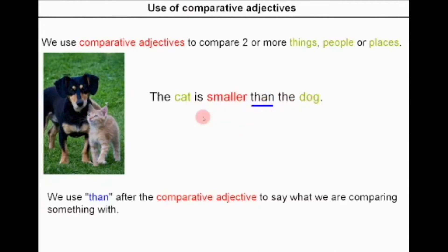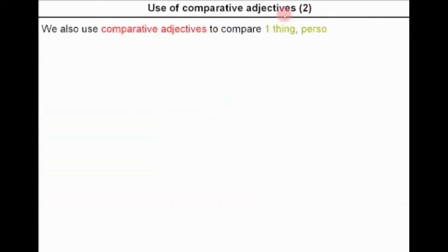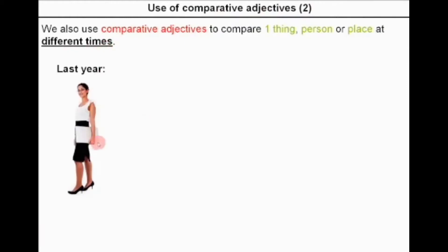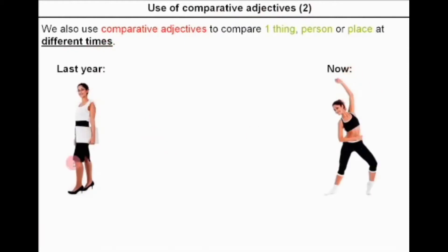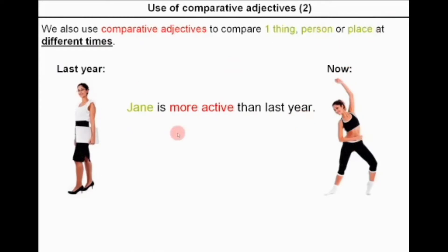It separates the cat and dog. We also use comparative adjectives to compare one thing, person, or place at different times. For example, this is last year, this is now — the same person but at different times. Jane is more active than last year. So, we are comparing one person at different times. We use 'than' after the comparative adjective to say what time period we are comparing something with.